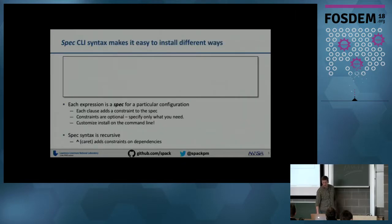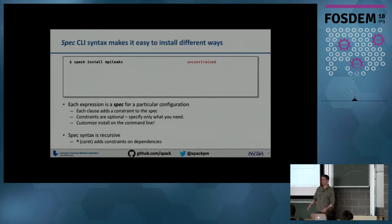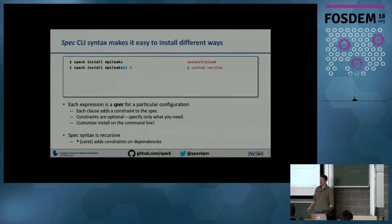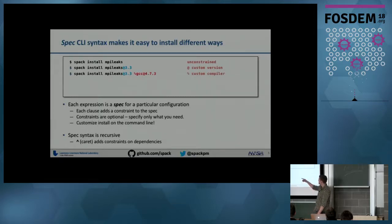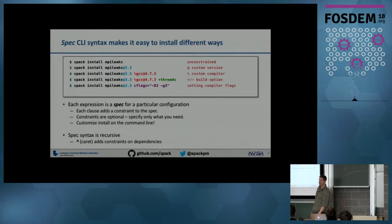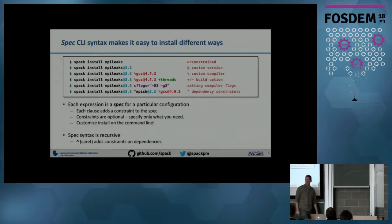We have a CLI syntax that's supposed to make it easy to install a package in lots of different ways. In the base case it looks a lot like another package manager — you might say 'spack install mpileaks', a tool we developed for analyzing MPI programs at Livermore. You can say install mpileaks at version 3.3, specify what compiler you want with %gcc@4.7.3, add build options exposed by packages, inject C flags, and this syntax is recursive — you can apply the same constraints on dependencies, saying build it with mpich version 3.2 and build that with GCC.